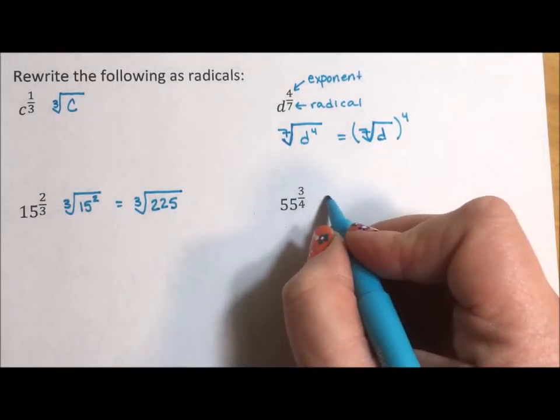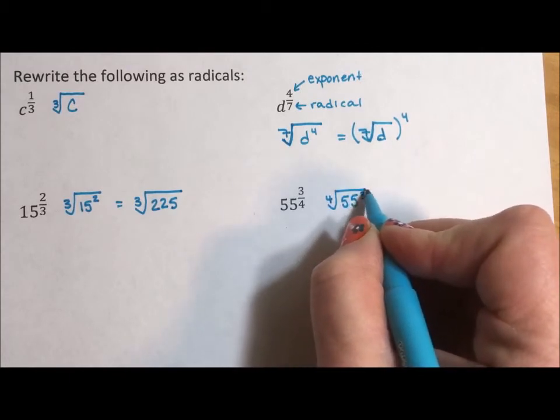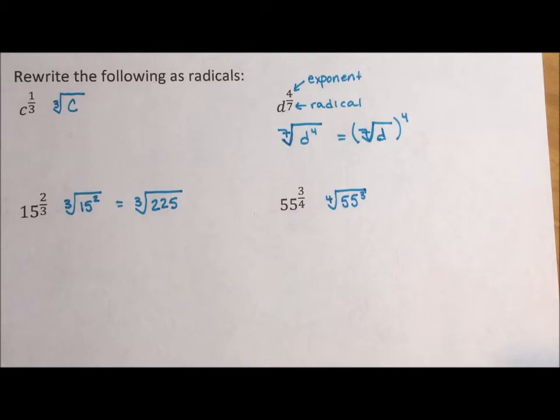And here we have the fourth root of 55 cubed. And without a calculator, I do not know what 55 cubed is.